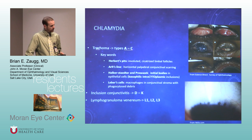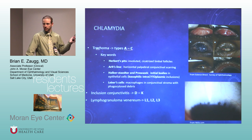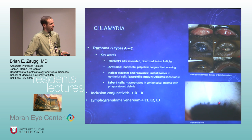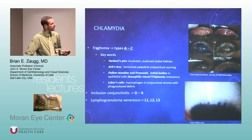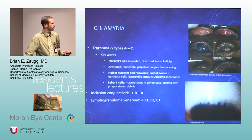Chlamydia — we don't see it as much in the US, but it's a common issue worldwide and comes up on tests. You'll get Herbert's pits, which are hollowed-out areas at the limbus. Arlt's line is conjunctival scarring on the upper eyelids — a white line there. On pathology you'll see intracytoplasmic inclusions. Types A through C are causing most of the ocular issues.